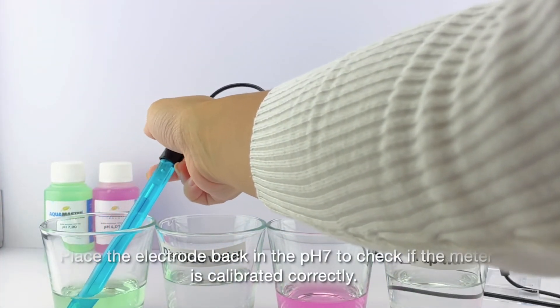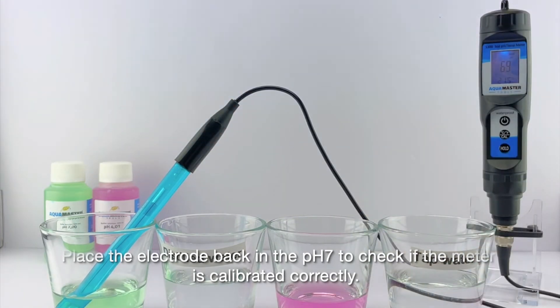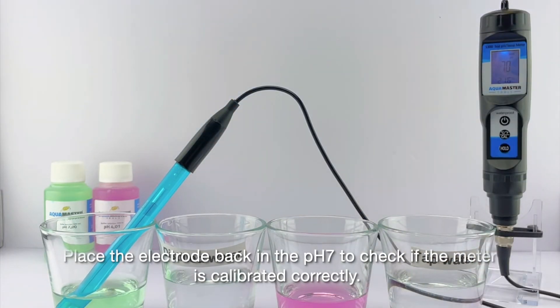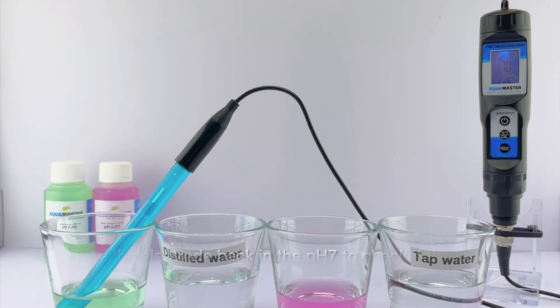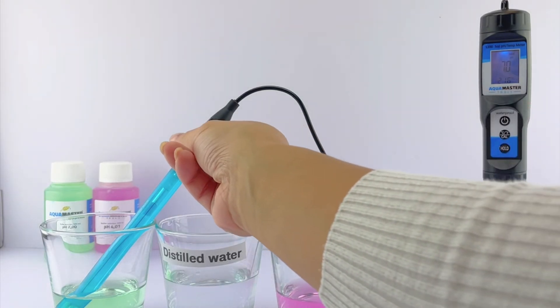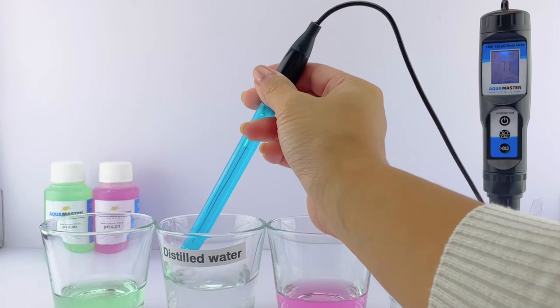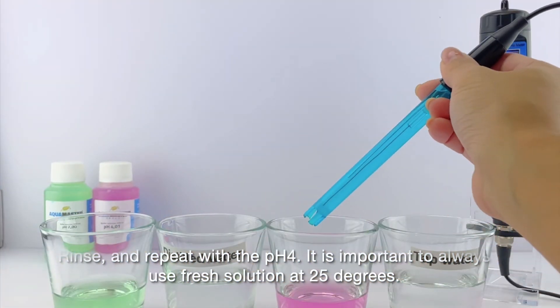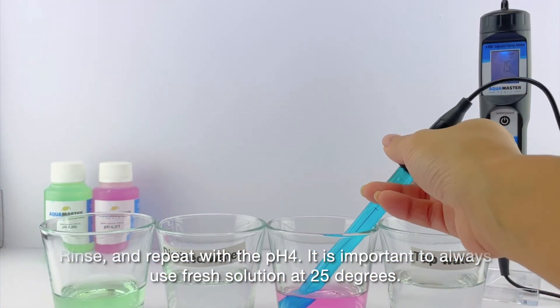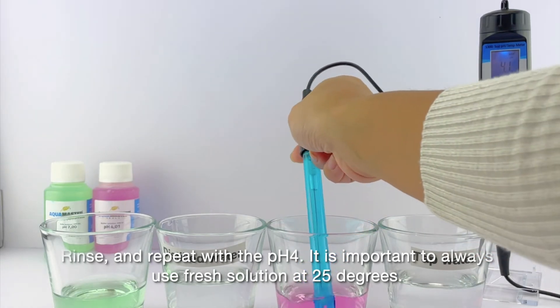Rinse the electrode back in the pH 7.00 to check if the meter is calibrated correctly. Rinse and repeat with the pH 4.00. It is important to always use fresh solution at 25 degrees.